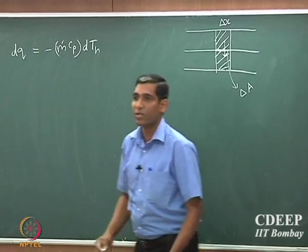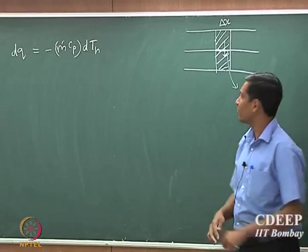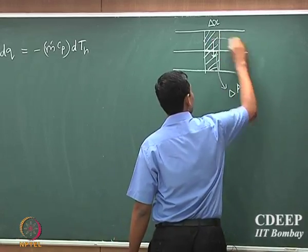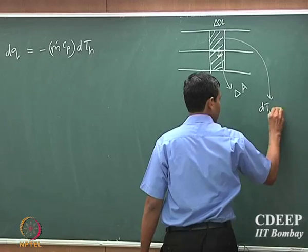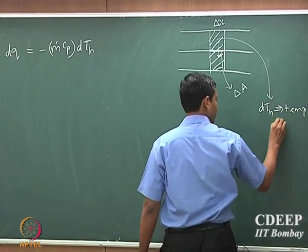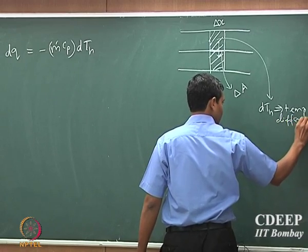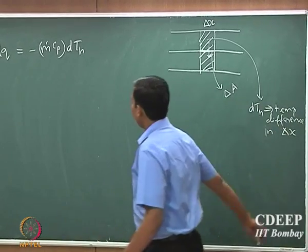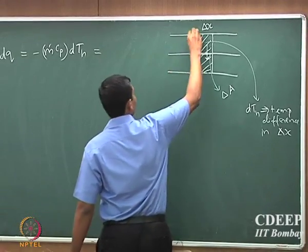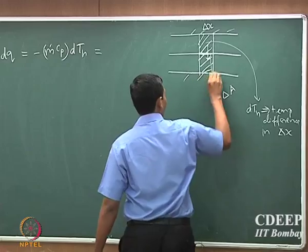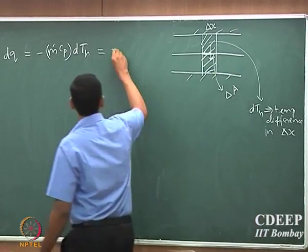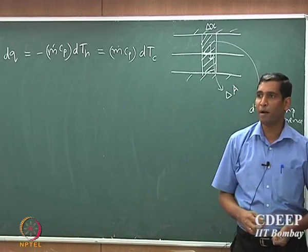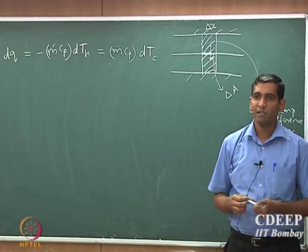dTh is the temperature difference in the hot fluid in this element — the temperature difference in delta x. At steady state, because there is no heat going out from the top and the bottom, that should be equal to m-dot Cp multiplied by dT, which is the amount of heat gained by the cold fluid.